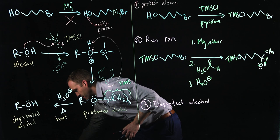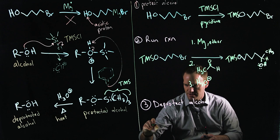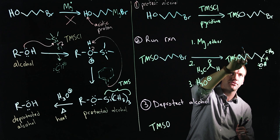The deprotection step here is simply to just undo this protection step that I have shown previously. So I have my protected alcohol, TMS, oxygen, one, two, three, four, five, six carbons in this chain.